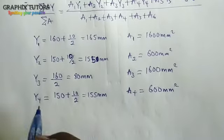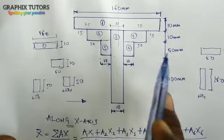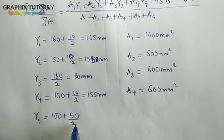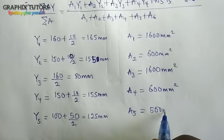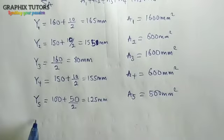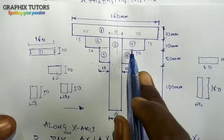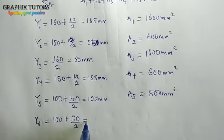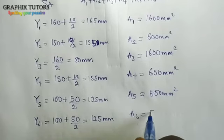For y5: I travel 100, and the distance of the figure itself is 50, so y5 = 100 + 50/2 = 125 mm. The area A5 remains 500 mm². For y6: similarly I travel 100, and the height is 50, so y6 = 100 + 50/2 = 125 mm. The area A6 is also 500 mm².